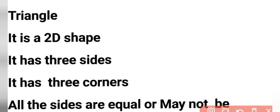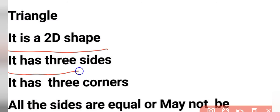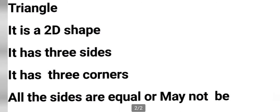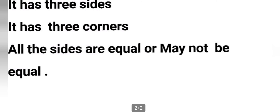What are the properties of a triangle? It is a 2D shape. It has 3 sides. Triangles come in various types.